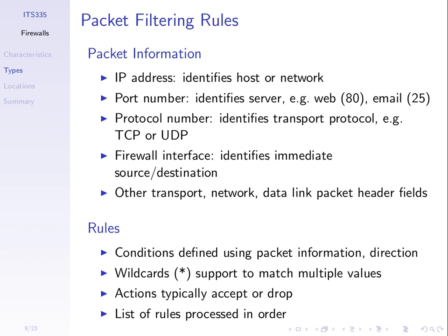Rules are processed in order. When a packet arrives, the firewall checks it against the first rule; if it doesn't match, it moves to the second, then the third, and so on. If no rule matches, the default action is applied — either accept or drop. That default policy is where the last rule in the table takes effect.